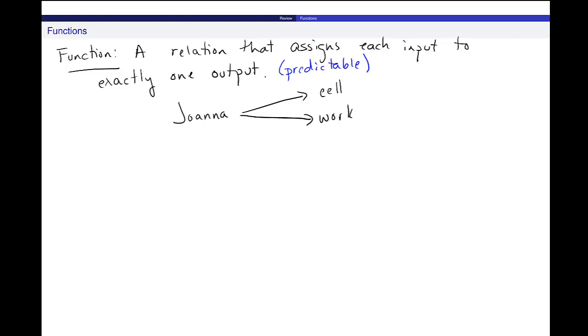An example from real life of a function is my name or people's names and their height. Each person has exactly one height associated with them. So when I put Joanna in as the input parameter, the output, if we had a list of everyone's height, would be my actual height. And then likewise, my friend Vince might be in here. And his height, 6 feet, not inches. 6 feet tall.